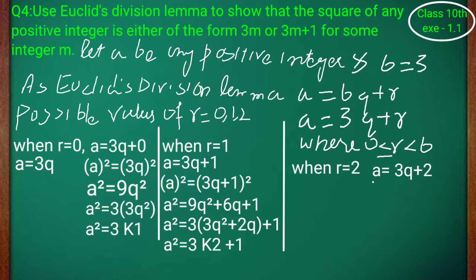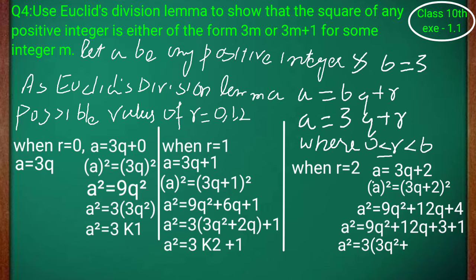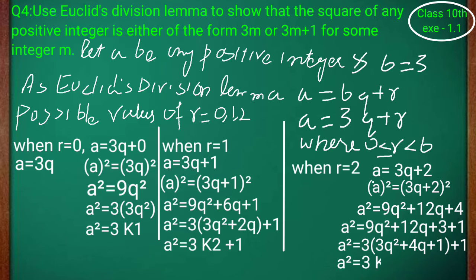When r equal to 2، equation بنے گی a equal to 3q plus 2۔ Square کریں گے both sides: a² equal to (3q+2)²۔ Formula apply کریں: a² equal to 9q² plus 12q plus 4۔ 4 کو split کریں 3 plus 1 میں: a² equal to 9q² plus 12q plus 3 plus 1۔ 3 کو common لیں: a² equal to 3(3q² plus 4q plus 1) plus 1۔ اس (3q²+4q+1) کو let k3 کر لیتے ہیں تو a² equal to 3k3 plus 1۔